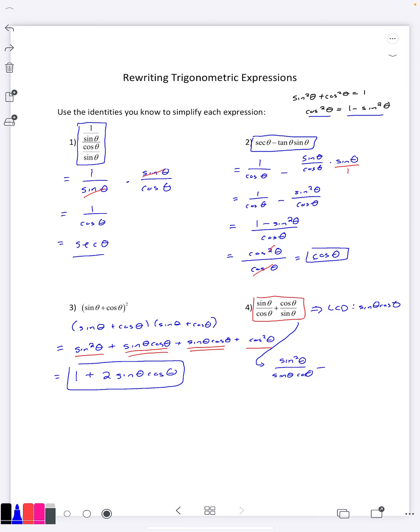For the second fraction you have to multiply top and bottom by cosine theta, and if you multiply the top you get cosine squared theta.